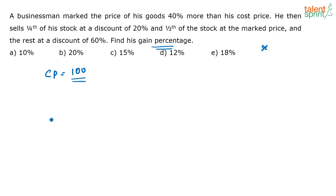A businessman marked the price of goods 40% more than the cost price. So if the actual cost of the articles was 100 rupees, the marked price is 140 rupees, because he has marked the goods at 40% more than the cost price.